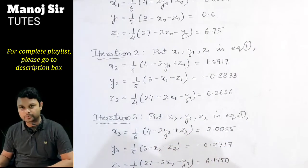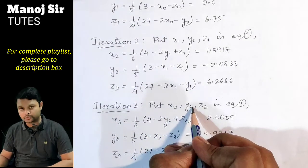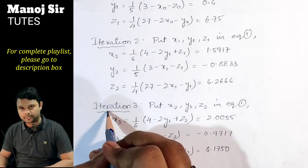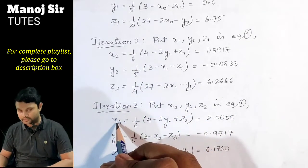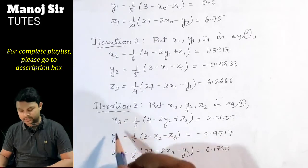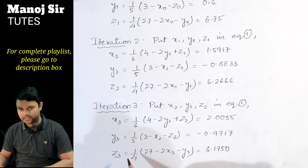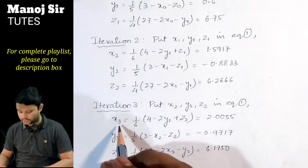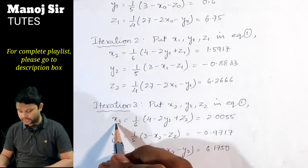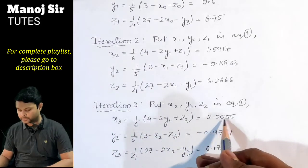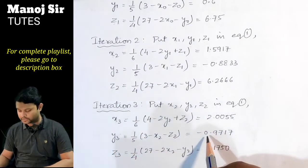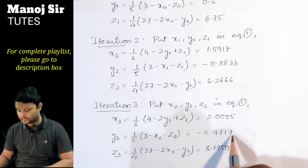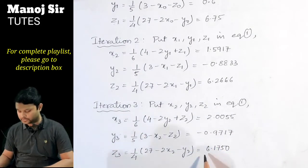For the third iteration, we substitute x2, y2, z2 into equation (1) to find x3, y3, z3 using subscript 2. We get: x3 = 2.0055, y3 = −0.9717, z3 = 6.1750.